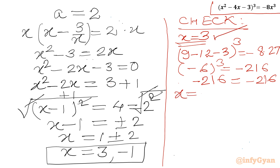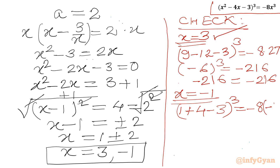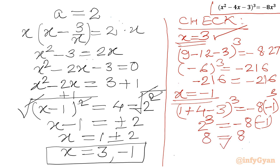Now checking x = -1: LHS = (1 - 4·(-1) - 3)³ = (1 + 4 - 3)³ = 2³ = 8. RHS = -8 × (-1)³ = -8 × (-1) = 8. Since LHS = RHS = 8, x = -1 is also a verified solution.